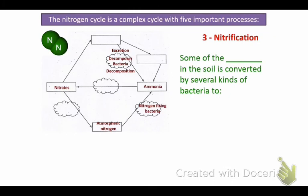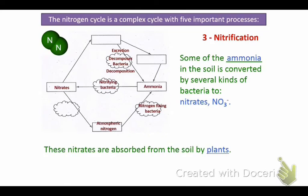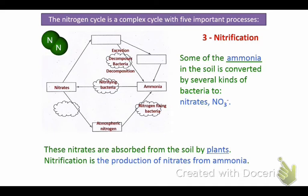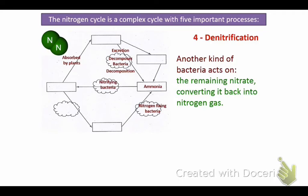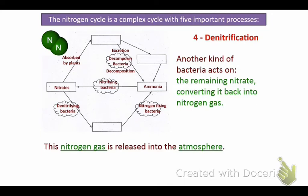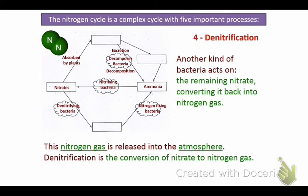Nitrification: some of the ammonia in the soil is converted by several kinds of bacteria into nitrates, and these nitrates are absorbed from the soil by plants — that's nitrification, the production of nitrates from ammonia. Denitrification is when another kind of bacteria acts on the remaining nitrate, converting it back to nitrogen gas — that's what completes our cycle. Essentially, it's the conversion of nitrate to nitrogen gas.